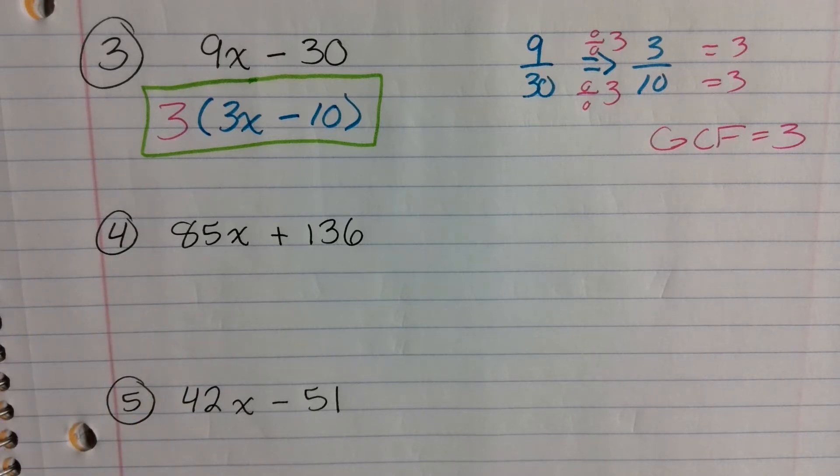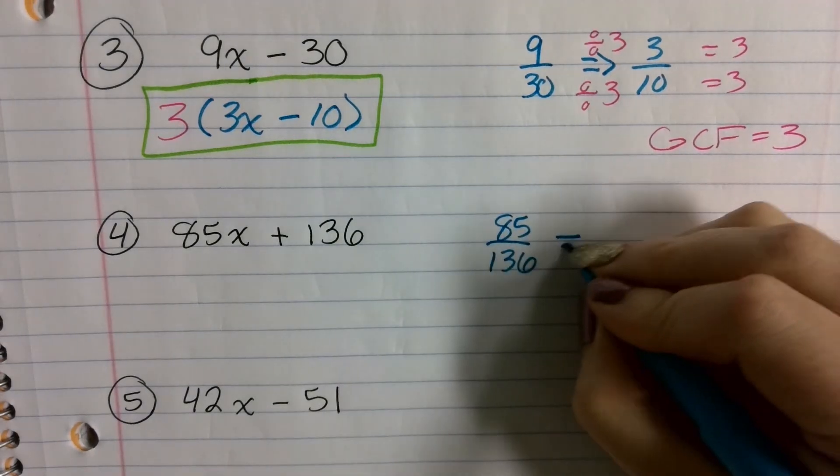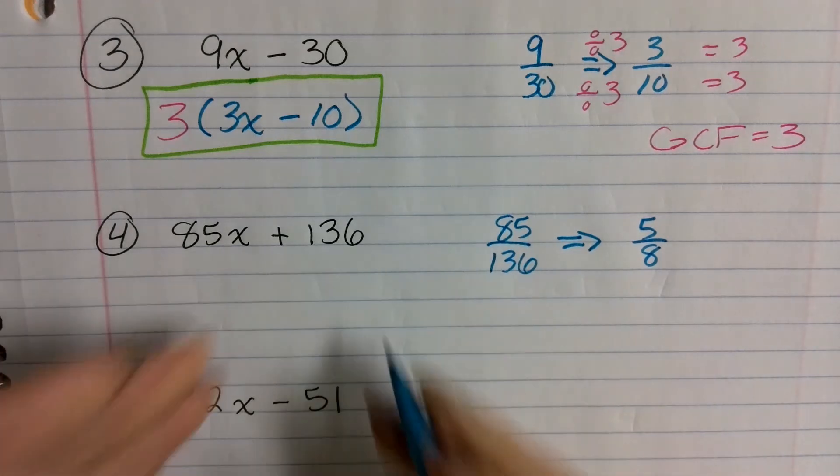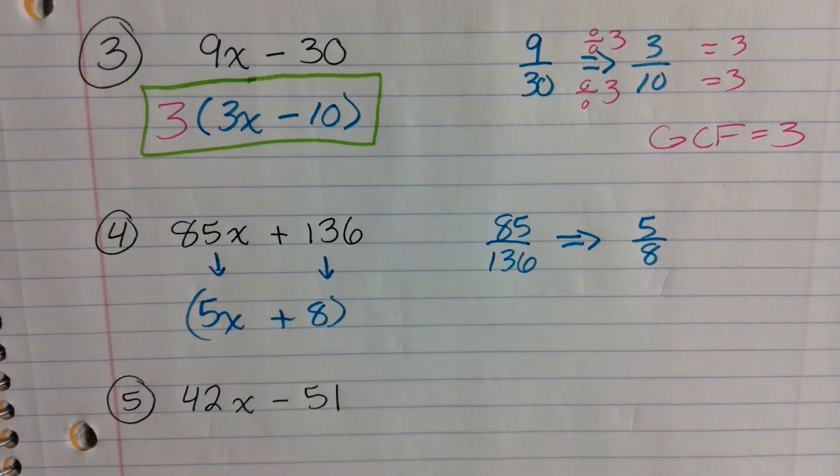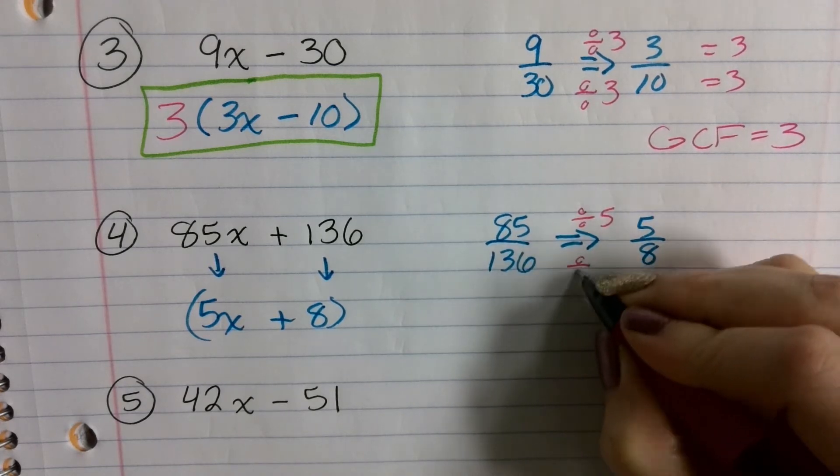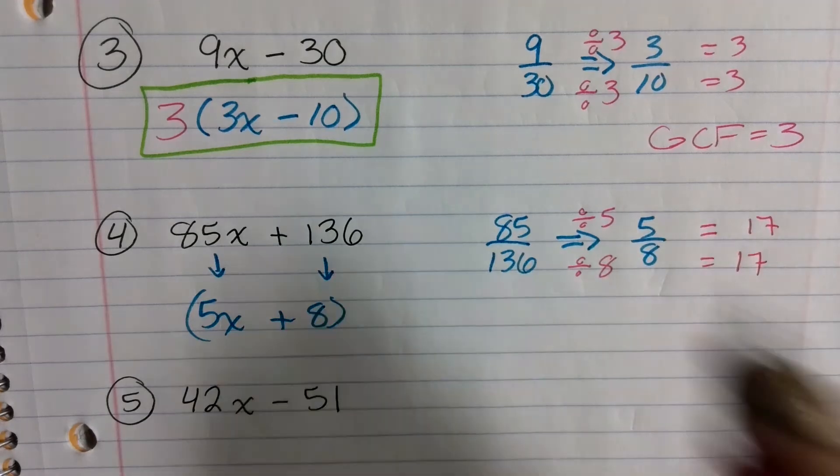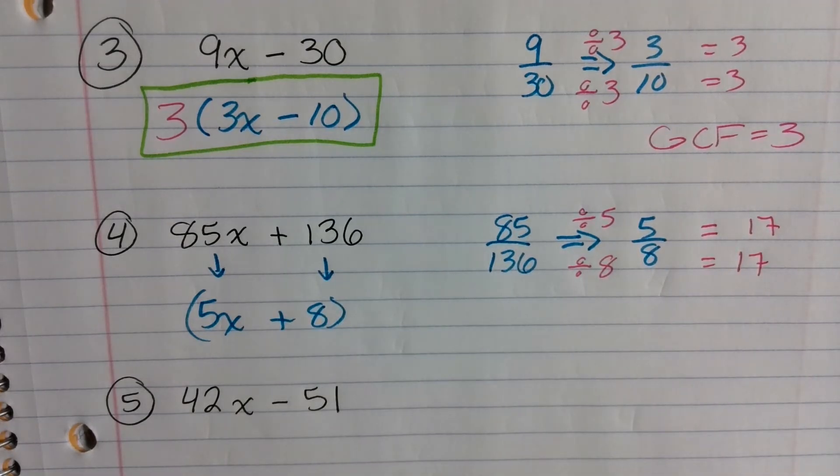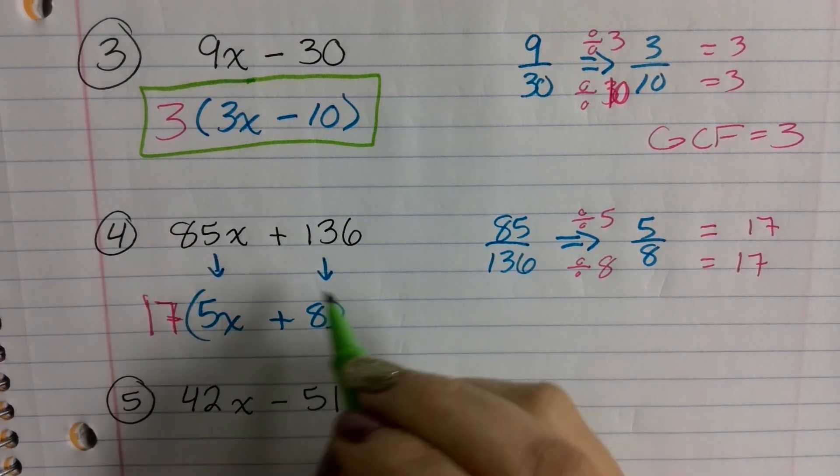Then, who can tell me what they got for number 4? Trevor? Very good. 17 and then the quantity 5x plus 8. So if you take the 85 and you divide it by 136 or put it as a fraction over 136, it simplifies to 5 over 8. So there's your new expression. This becomes a 5x. This becomes plus 8. Then the greatest common factor, if you do 85 divided by 5 and you do 136 divided by 8, that's going to equal 17 for both of them. So 85 divided by the 5, 136 divided by the 8, it's going to come out. So this should have been divided by 8. That's going to come out to 17. So there's your expression. So 17 times the quantity 5x plus 8.